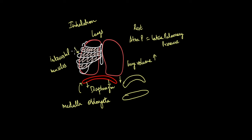The intercostal muscles also contract and they pull the ribs upwards — they are attached to the ribs and pull them upwards. This also increases the lung volume. So in total, during inhalation, as the diaphragm and the intercostal muscles contract, the lung volume increases.